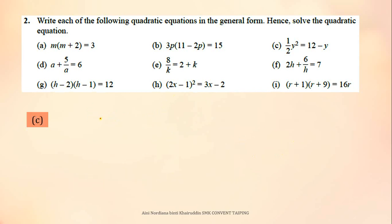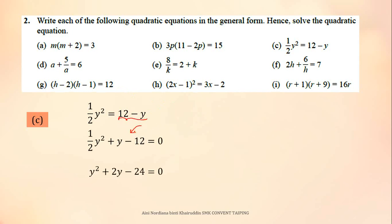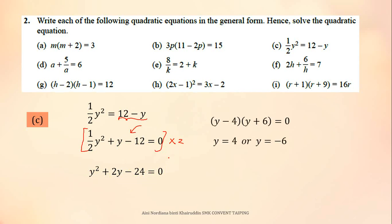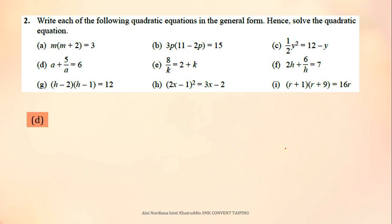Have a look at equation C. Bring the two algebraic terms to the left side, then multiply all terms by 2. So, 1 over 2 y squared times 2 is y squared; 1 times 2y times 2 is 2y; negative 12 times 2 is negative 24. This is now in general form, so factorize to get the values of y: 4 and negative 6.